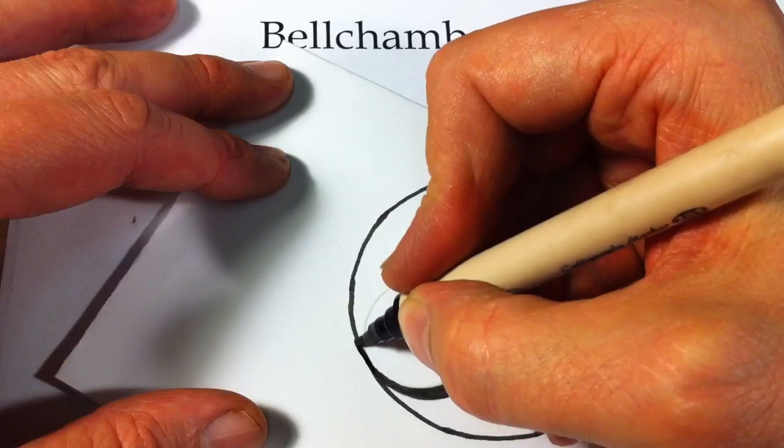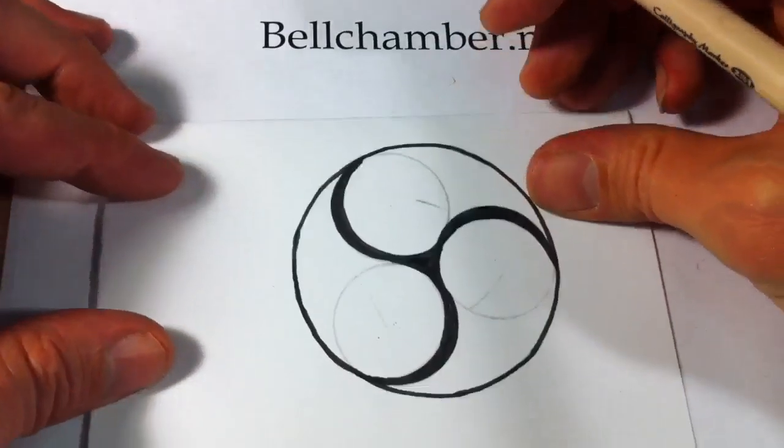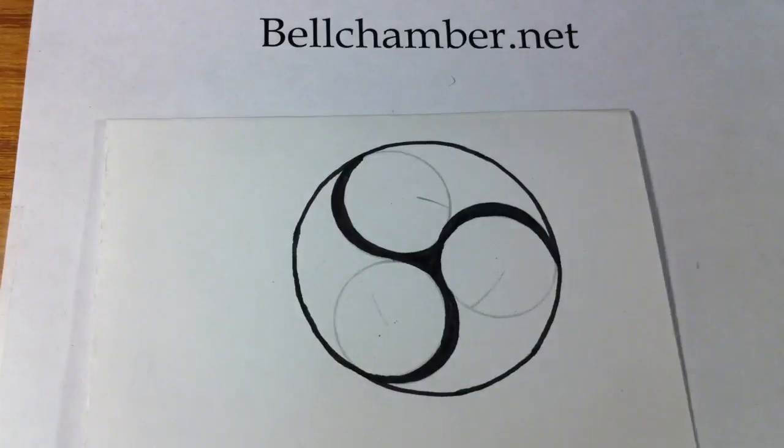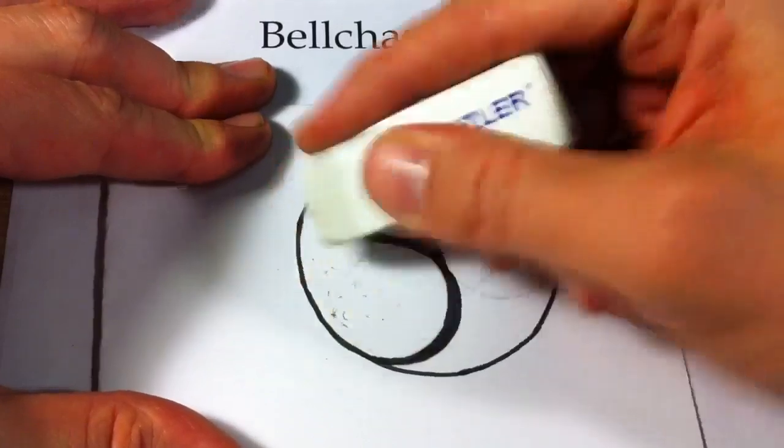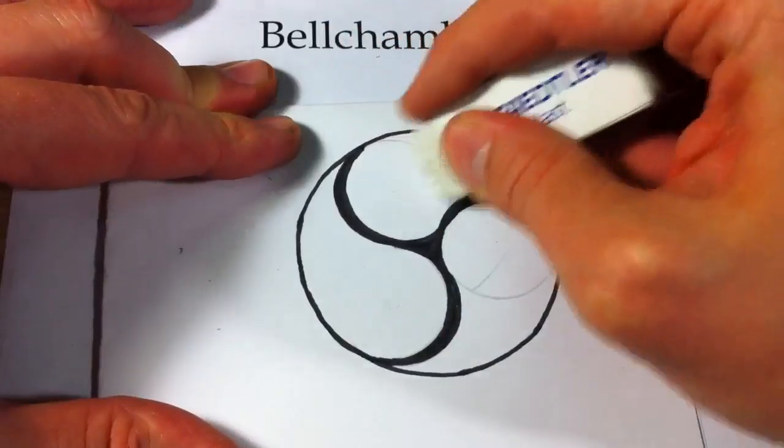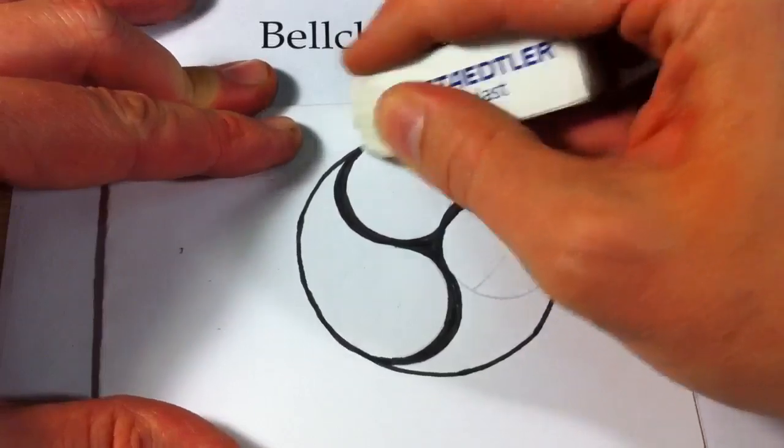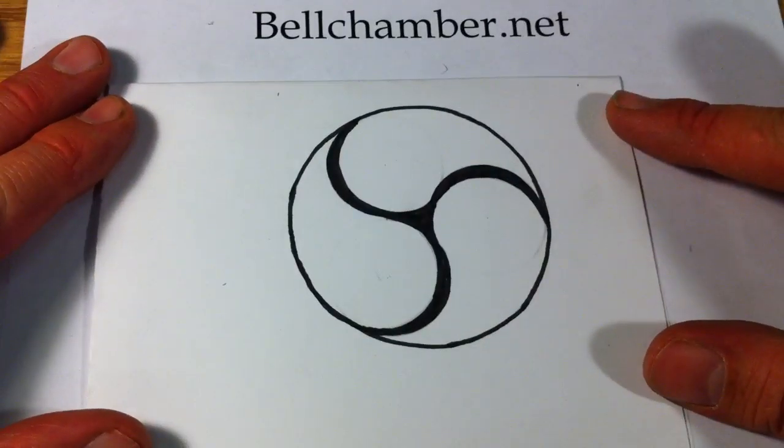That's likely where it originated. Now with this design inked, what you want to do is just erase your pencil marks, and you've got the basis of your Celtic spiraling Triskel.